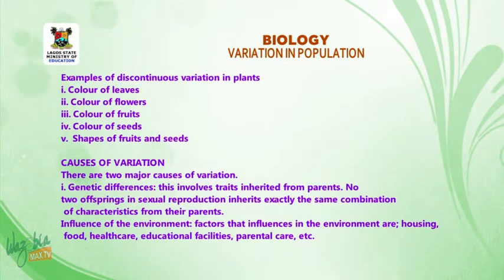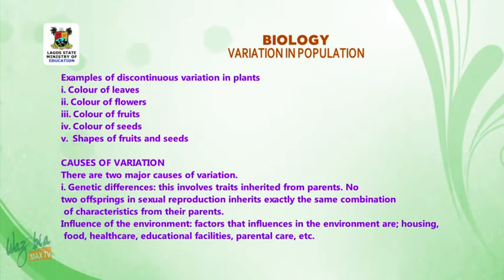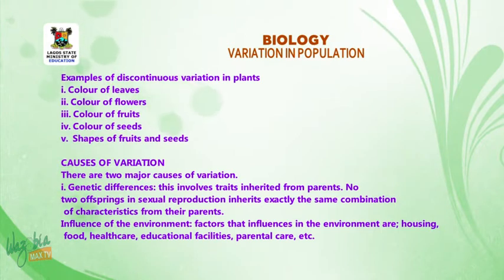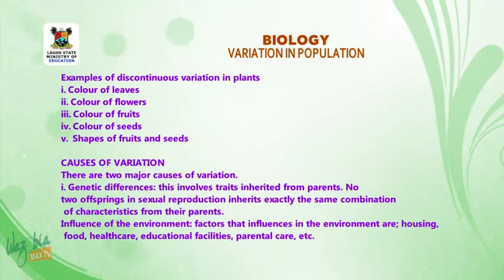Examples of discontinuous variation in plants include: color of leaves, color of flowers, color of fruits, color of seeds, and shapes of fruits and seeds.